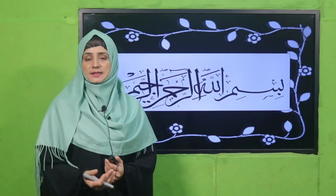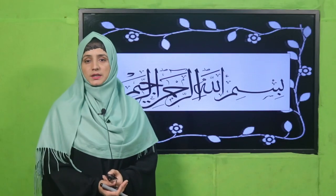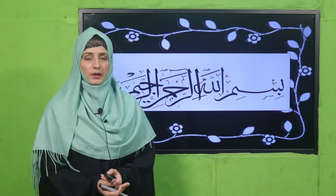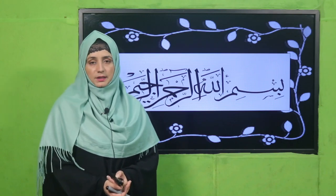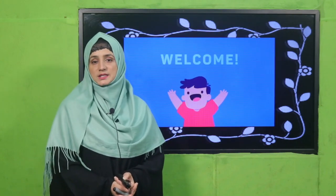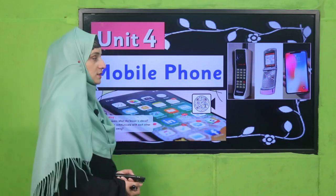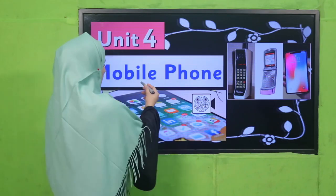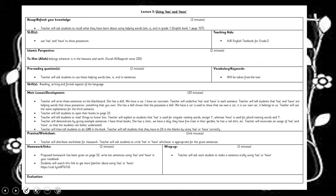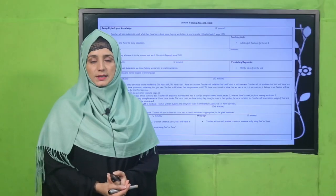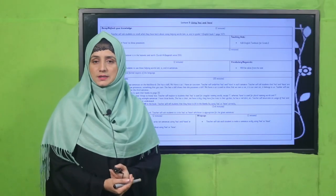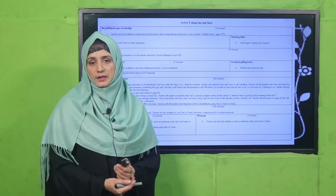As-salamu alaykum, my dear students. How are you? I hope you are enjoying the best of health. Welcome to my class — English for Grade 2. We are learning Unit Number 4, and its title is 'Mobile Phone.' My dear fellow teachers, this lesson plan, PowerPoint presentation, and worksheet links are given below. You may click, download, or adjust them for your ease.